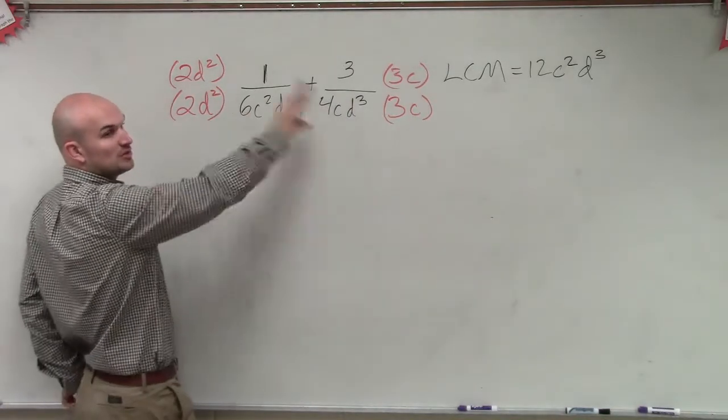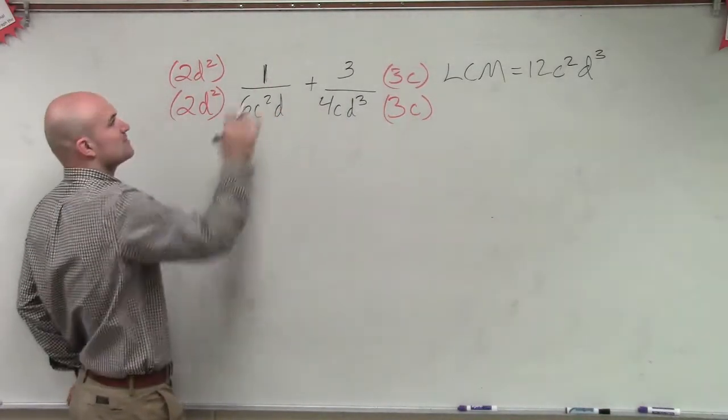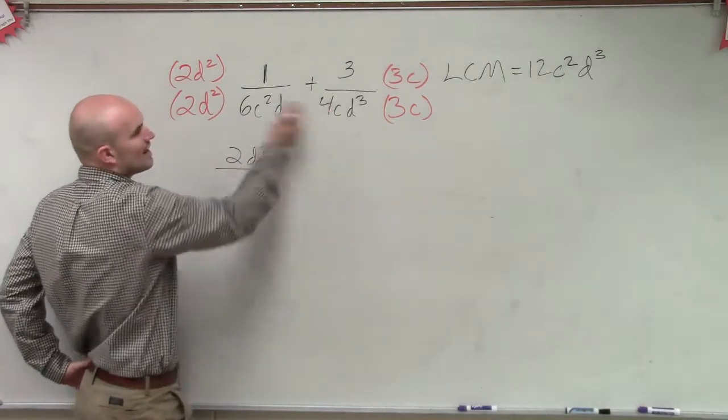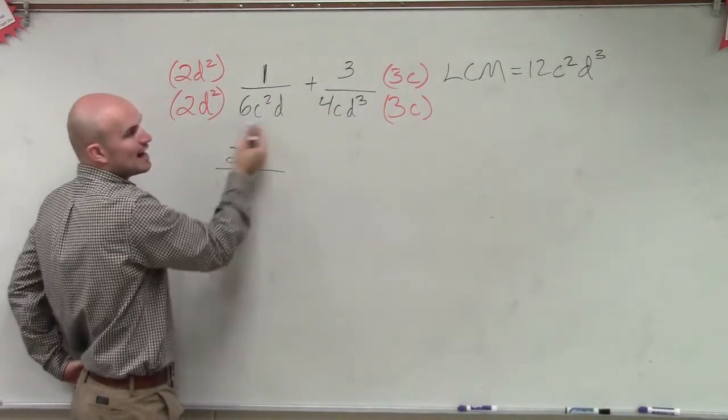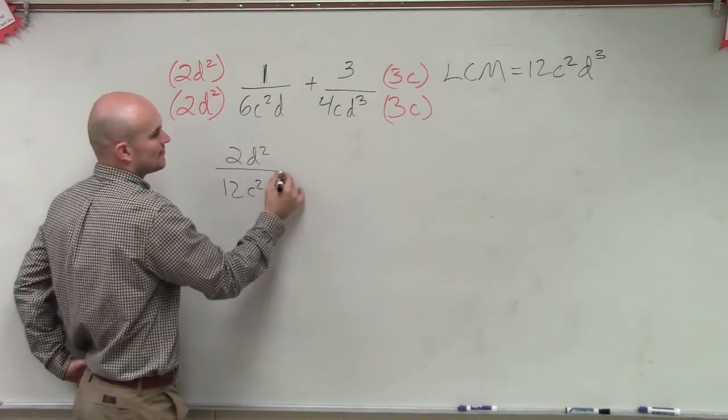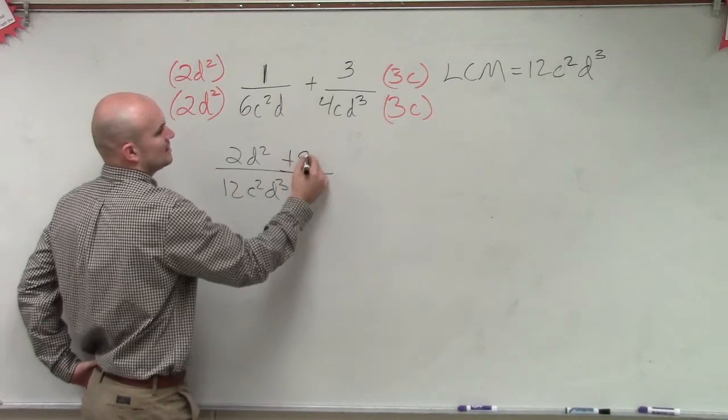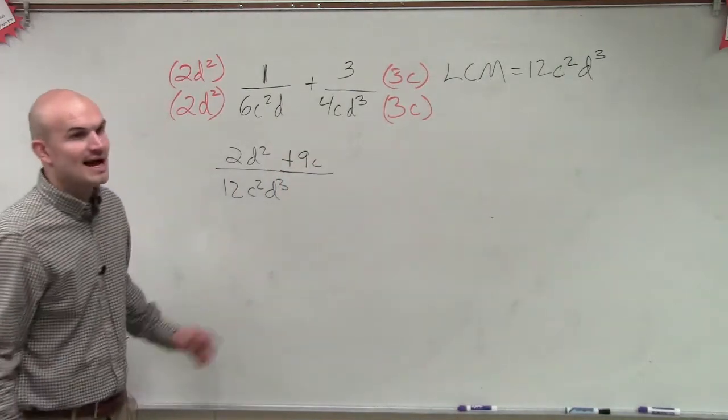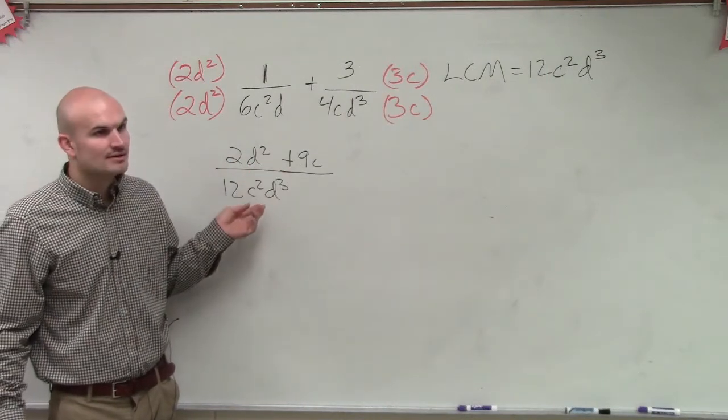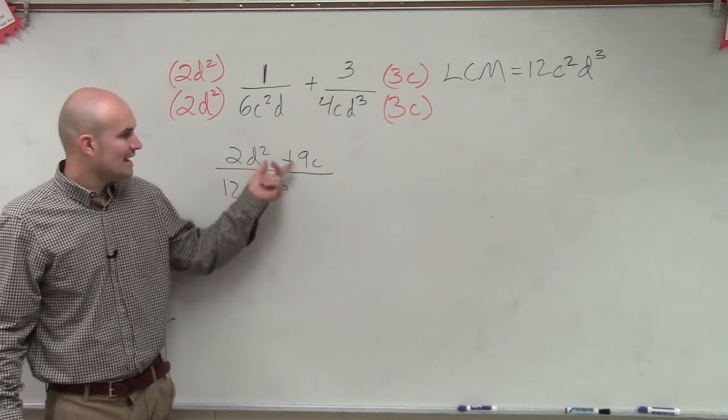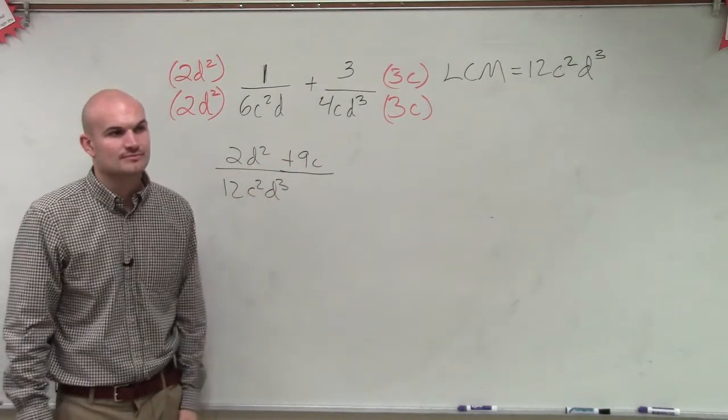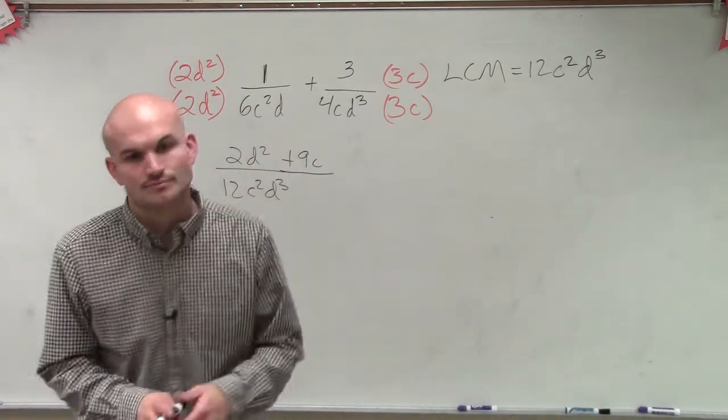So now, we have multiplying fractions, which we already discussed, right? Multiplying fractions, we just multiply across. So I have 2d² over, and if you did your work right, you're going to have your LCM. 12c²d³ plus 9c. Now, we cannot combine 2d² plus 9c, OK? And because they're not common terms, so we're just going to leave this as our final answer. OK? And that's it.